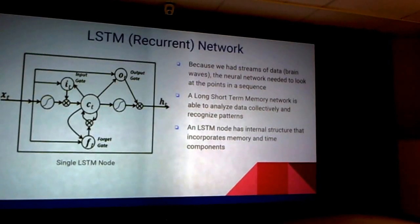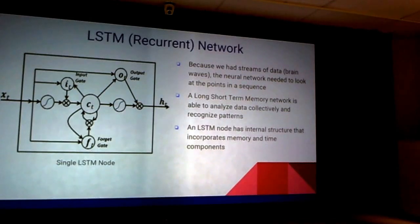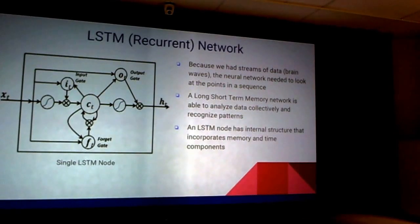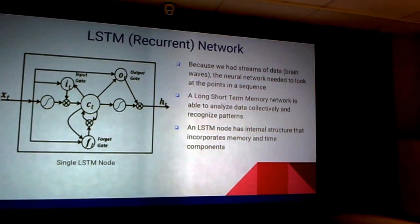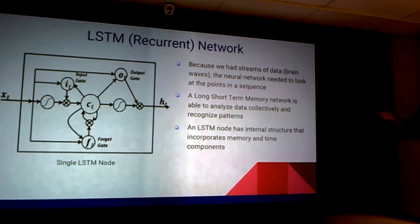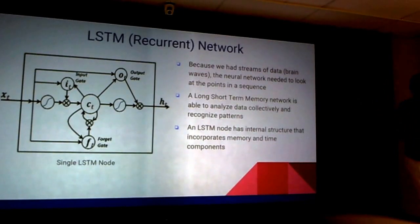Neural networks are just one form of attempted artificial intelligence. Within the category of neural networks there are many sub-fields. You have feed-forward networks, where you simply take data and pass it through a bunch of neurons. Or you have recurrent networks, which is what we're using here.